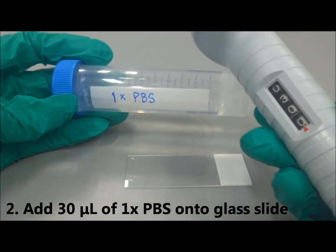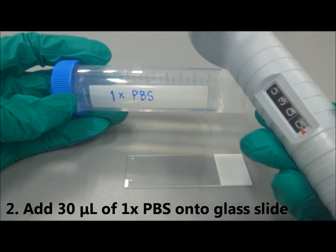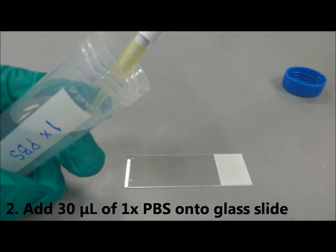Next, add 30 microliters of 1x PBS buffer solution to the middle of the slide.